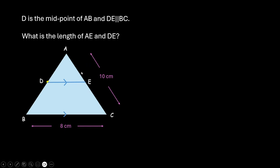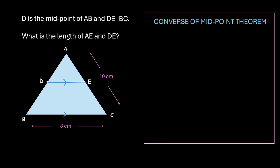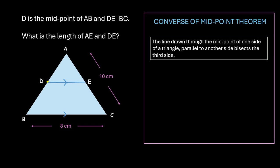So, in order to find the length of AE, we need to look at the converse of midpoint theorem. The converse theorem states that the line drawn through the midpoint of one side of a triangle parallel to another side bisects the third side. So, it is saying that E bisects AC.